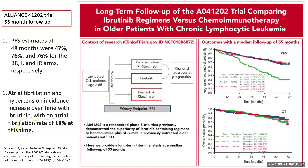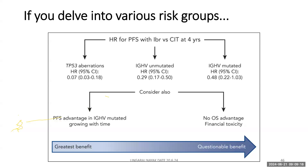Ibrutinib carries approximately 18 to 20 percent risk of atrial fibrillation at seven to eight years of follow-up, requiring beta blockers and anticoagulation. Subgroup analysis of the CALGB study showed the greatest PFS benefit in the TP53 aberration group (hazard ratio 0.07), while IGVH-mutated patients had a hazard ratio of 0.48 — just crossing unity — suggesting no clear OS advantage in that group when factoring in financial toxicity of long-term BTK inhibitor.